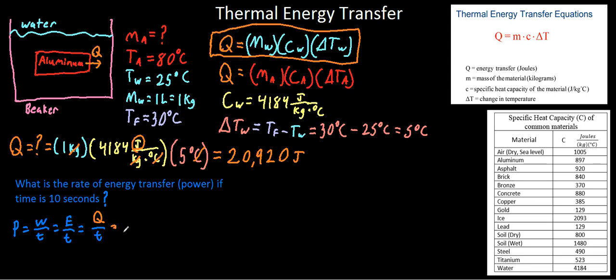So to solve for this, we just plug in our numbers that we got here, which is, well, Q is 20,920 joules. And then time, let's go ahead and pick the right color here. Time is just 10 seconds.